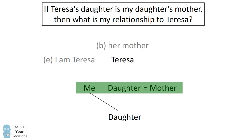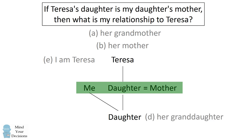Teresa's mother is one level above, and Teresa's grandmother is two levels above. Teresa's granddaughter will be two levels below Teresa, so that's also not a correct answer choice. So we can eliminate all of these answer choices.